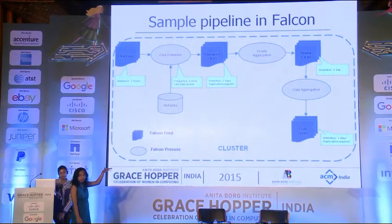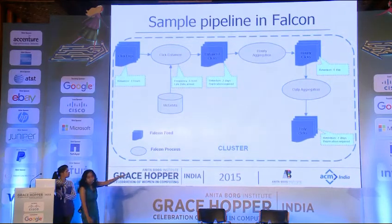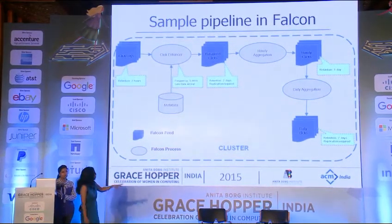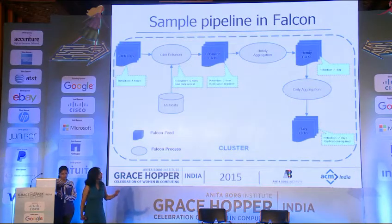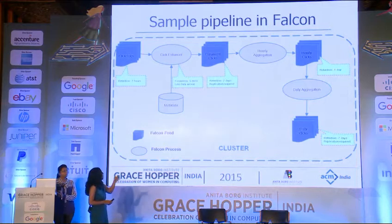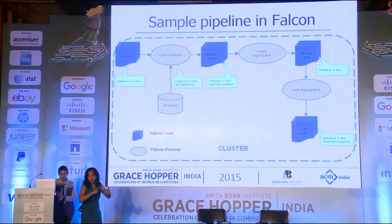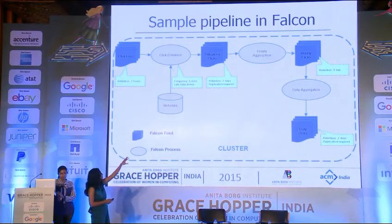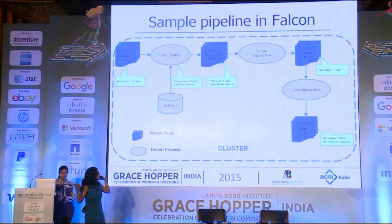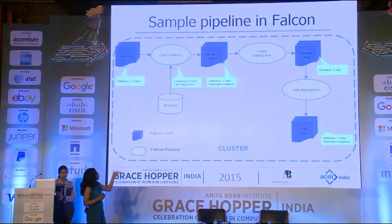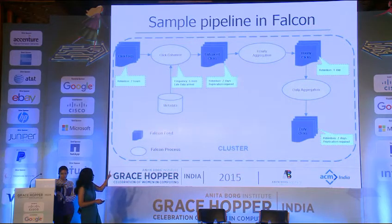We talked about Hadoop clusters and processes running in clusters with data on HDFS. In Falcon, the terminology we use is called an entity — all these things are entities. A cluster is an entity. A process is an entity that runs on a cluster. A feed — the data itself — is also an entity that resides on a cluster. These are the three kinds of entities. One process can run on multiple clusters; the same processing logic can run on two different clusters. Similar kinds of data can reside on two different clusters. This is how the relationship works.